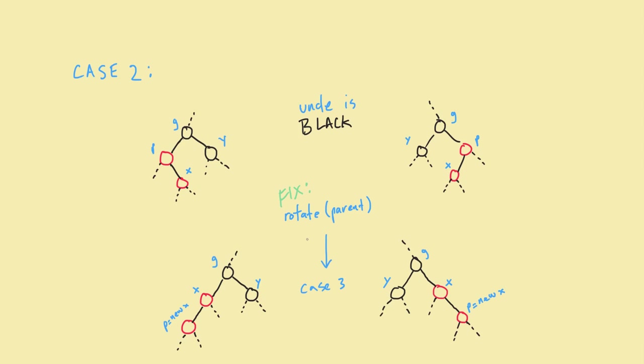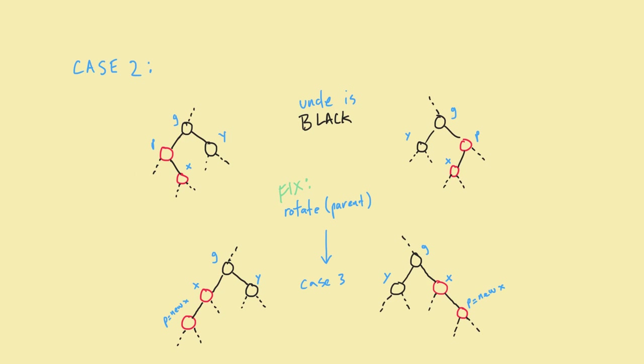How about a case two? So case two has a couple of different properties. The first one is when you have this violation and the uncle node is a black node. But the other thing is that the violating node, if you will, this X, is a right child of a left child, or it's a left child of a right child.